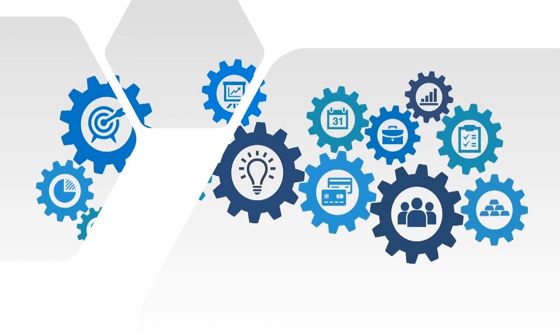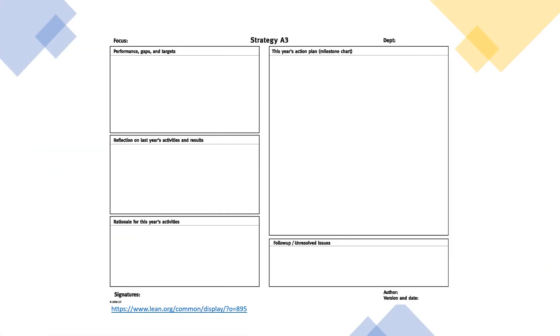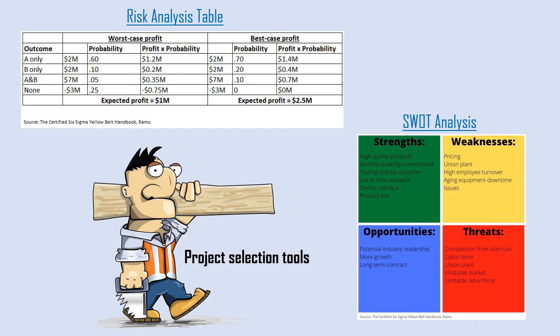An organization is unlikely to invest in a project that does not align with the overall organizational strategy. A good start for an organization for their goals is to use an A3 planning sheet as shown on the screen. Planning for any organization is a starting point for a successful year and for the strategic goals and objectives. As previously noted, the Six Sigma projects that are selected should be in line with these goals and objectives. Alternatively, some companies use Hoshin planning or an X matrix for this activity. Two additional tools that you can use to help in your project selection are a risk analysis table and a SWOT analysis, which stands for strengths, weaknesses, opportunities, and threats.